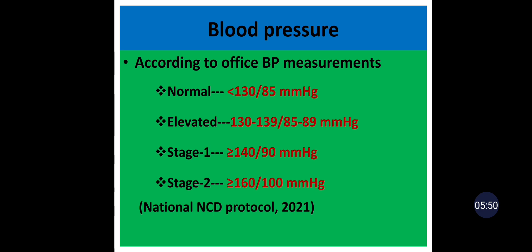According to the AHA/ACC 2017 guideline: normal blood pressure is systolic less than 120 mmHg and diastolic less than 80 mmHg. Elevated blood pressure: systolic 120–129 mmHg and diastolic less than 80 mmHg. Stage 1 hypertension: systolic 130–139 mmHg and/or diastolic 80–89 mmHg. Stage 2 hypertension: systolic ≥140 mmHg and/or diastolic ≥90 mmHg.